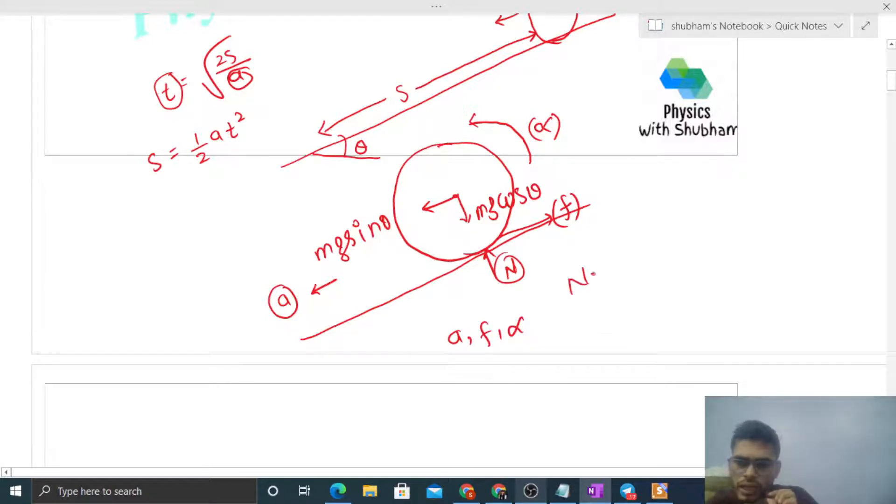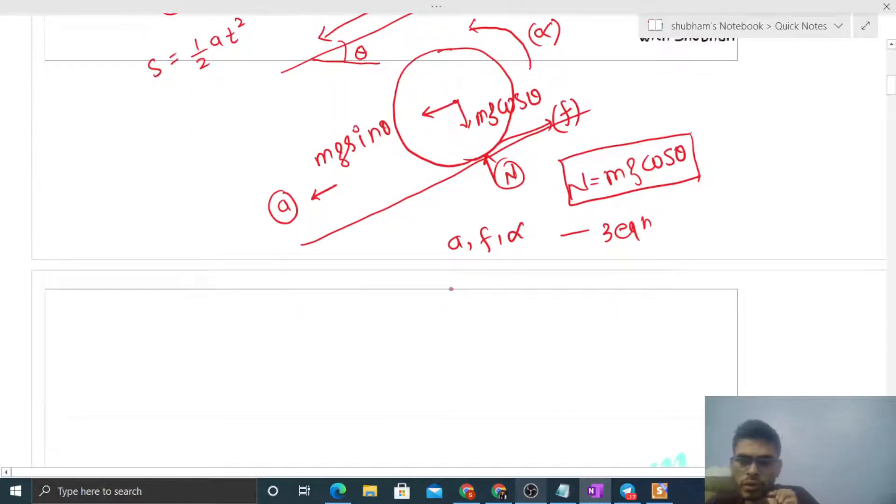We have three variables so we need three equations. First equation: for pure rolling, a equals r times alpha. Second equation: F equals ma, so mg sin theta minus friction force equals mass times acceleration. Third equation: torque equals I alpha. Only friction force creates torque, so f times r equals I times alpha.